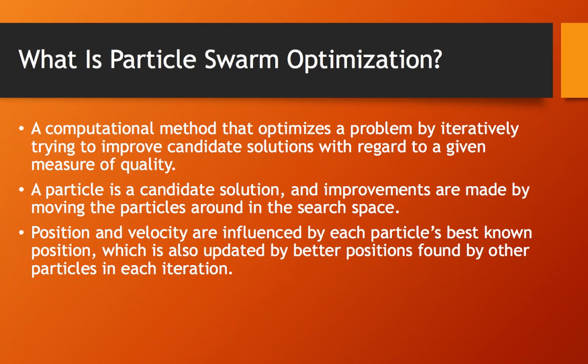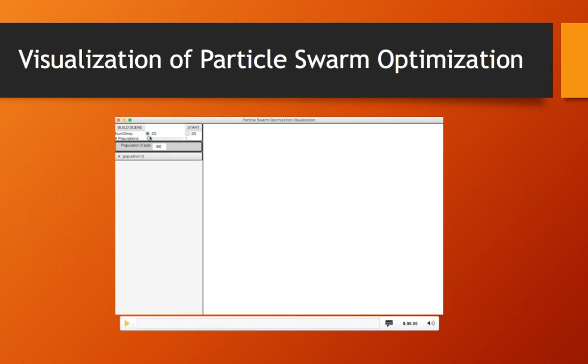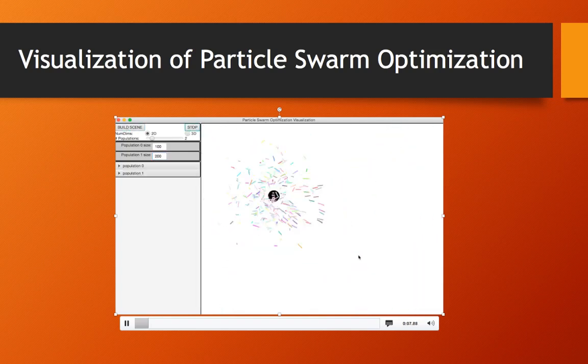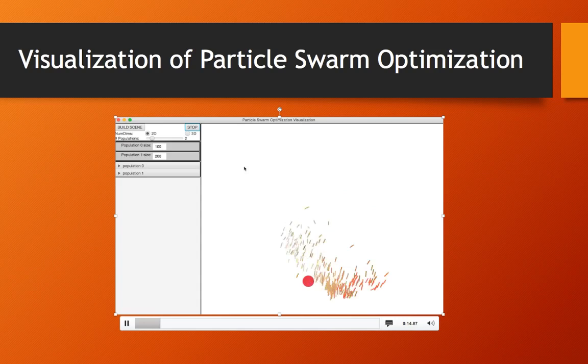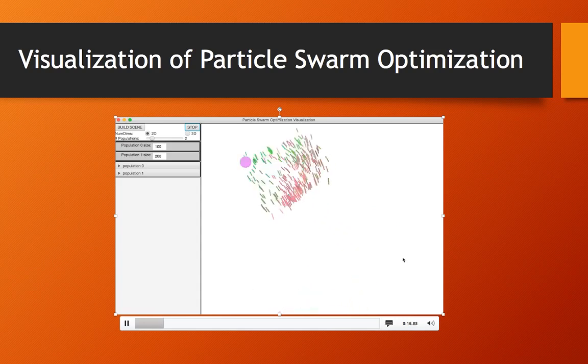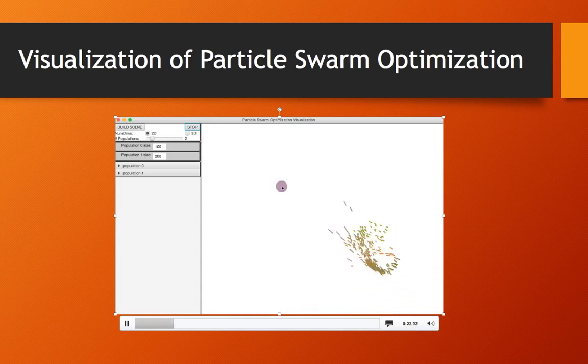Here is a quick visualization using a Java program that follows the mouse cursor. You can see the particles start as a swarm and then swarm to the solution. This visualization moves the goal around quite quickly, and there is also a question of whether particles should die off after a certain point.